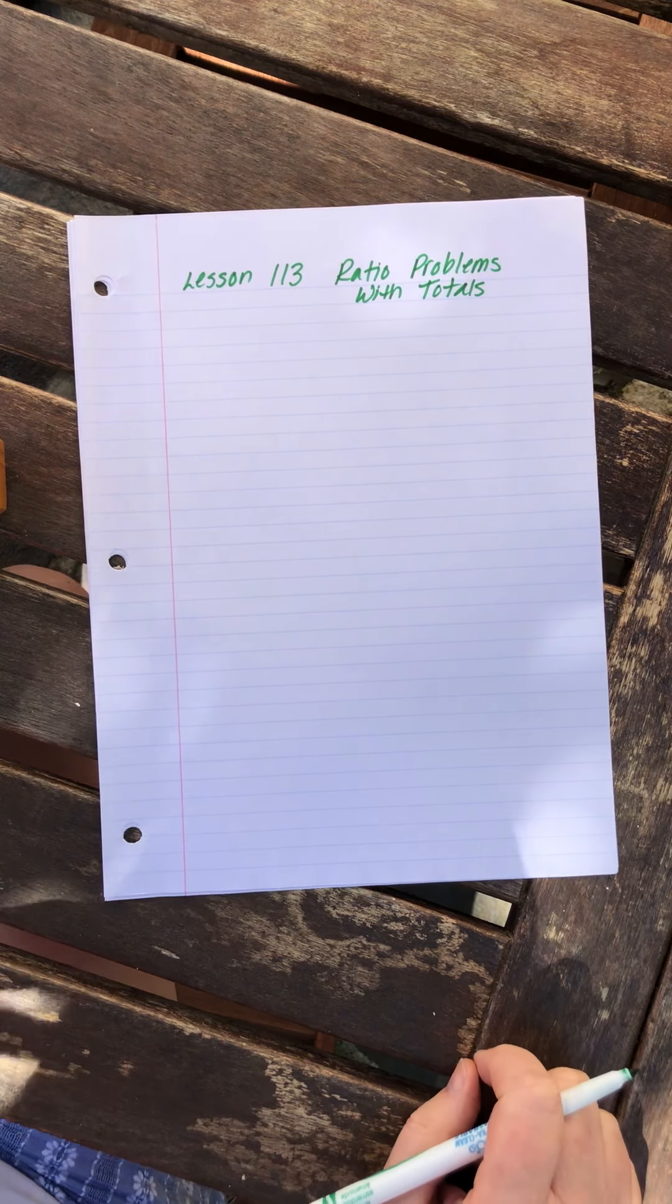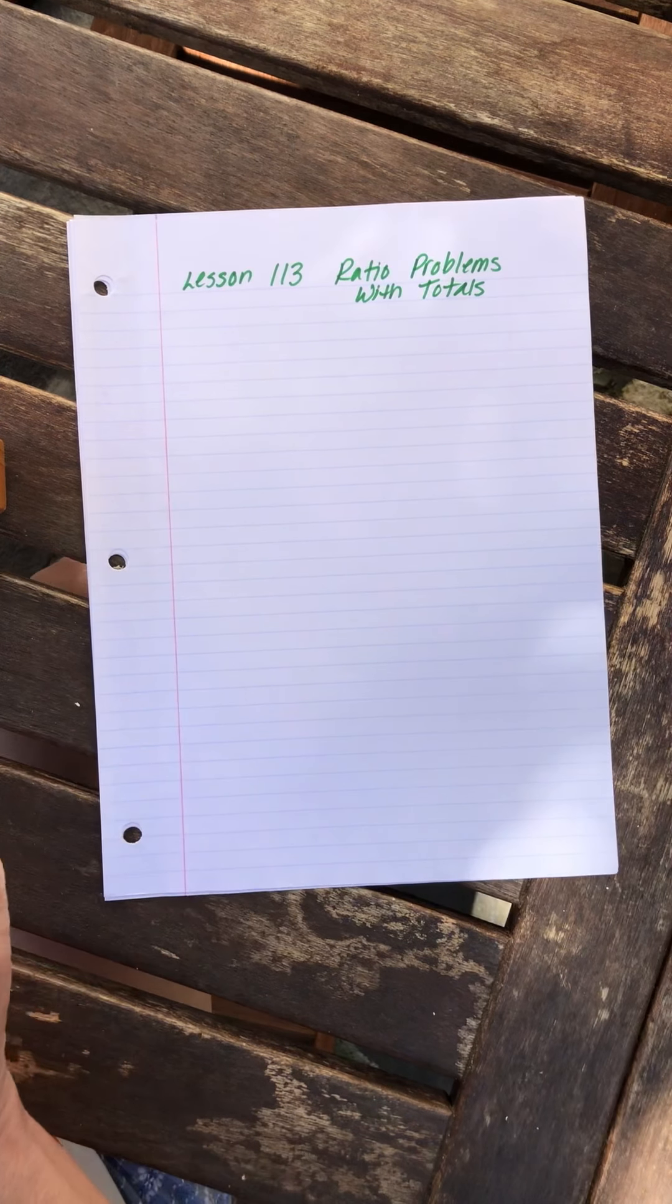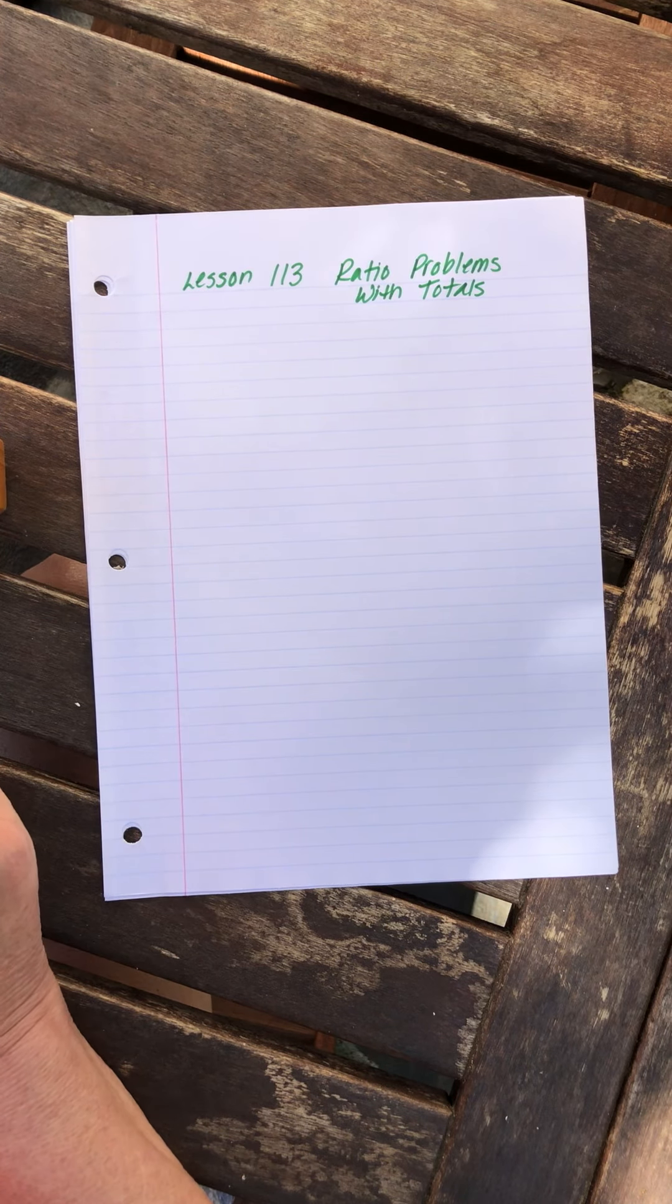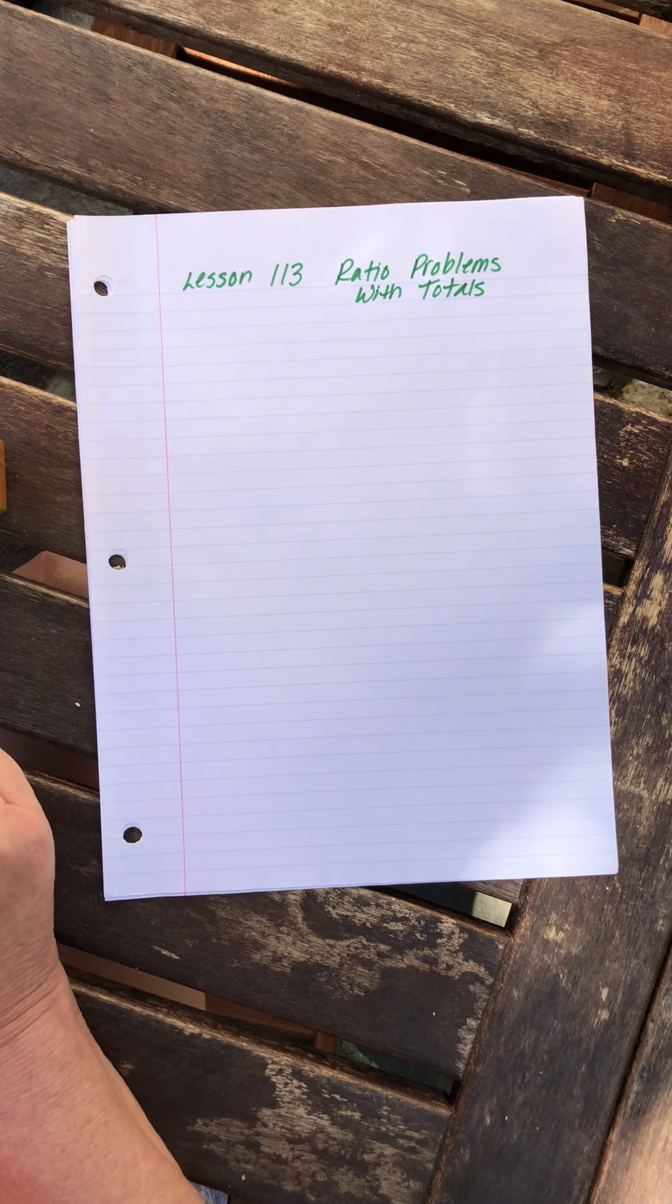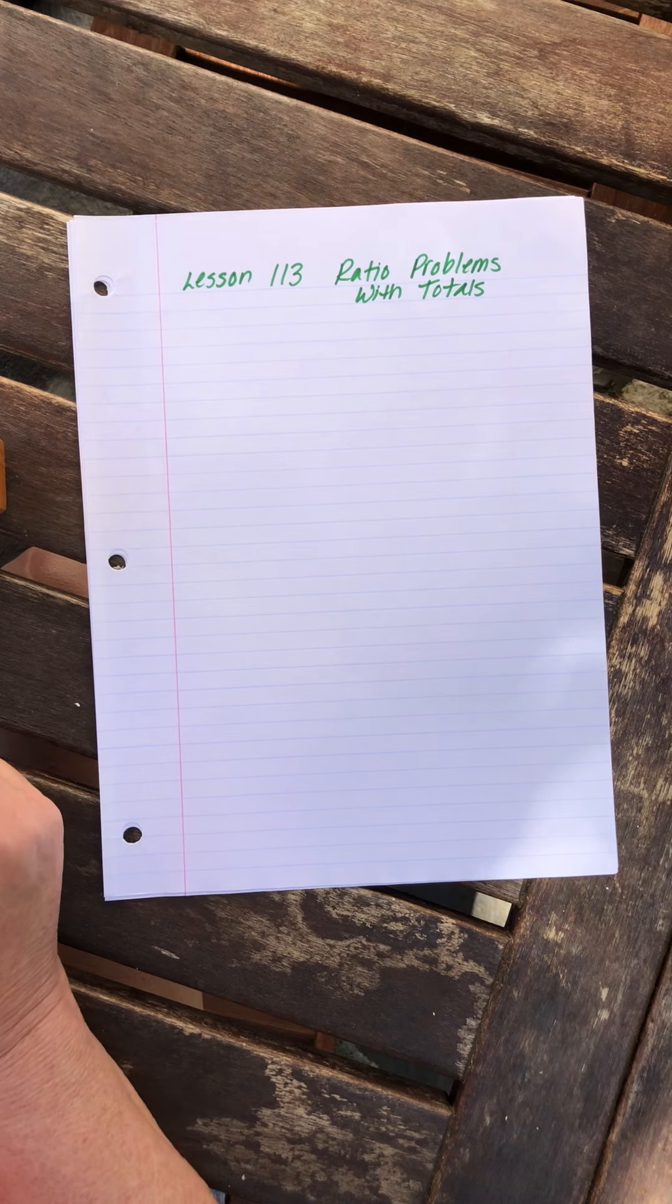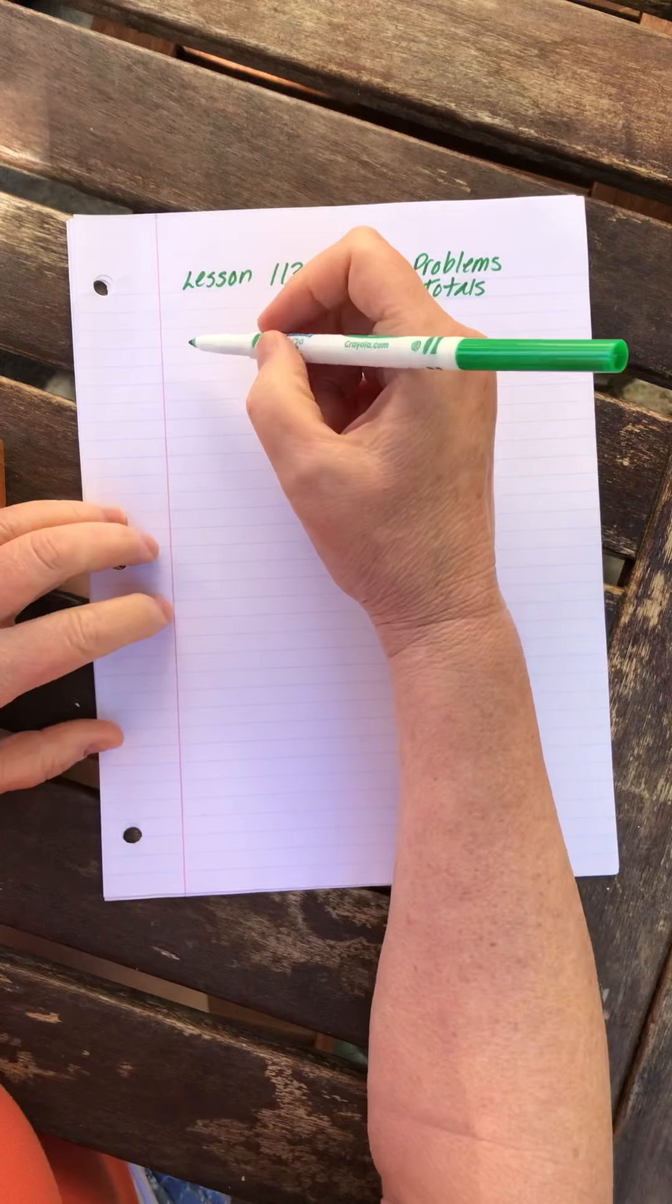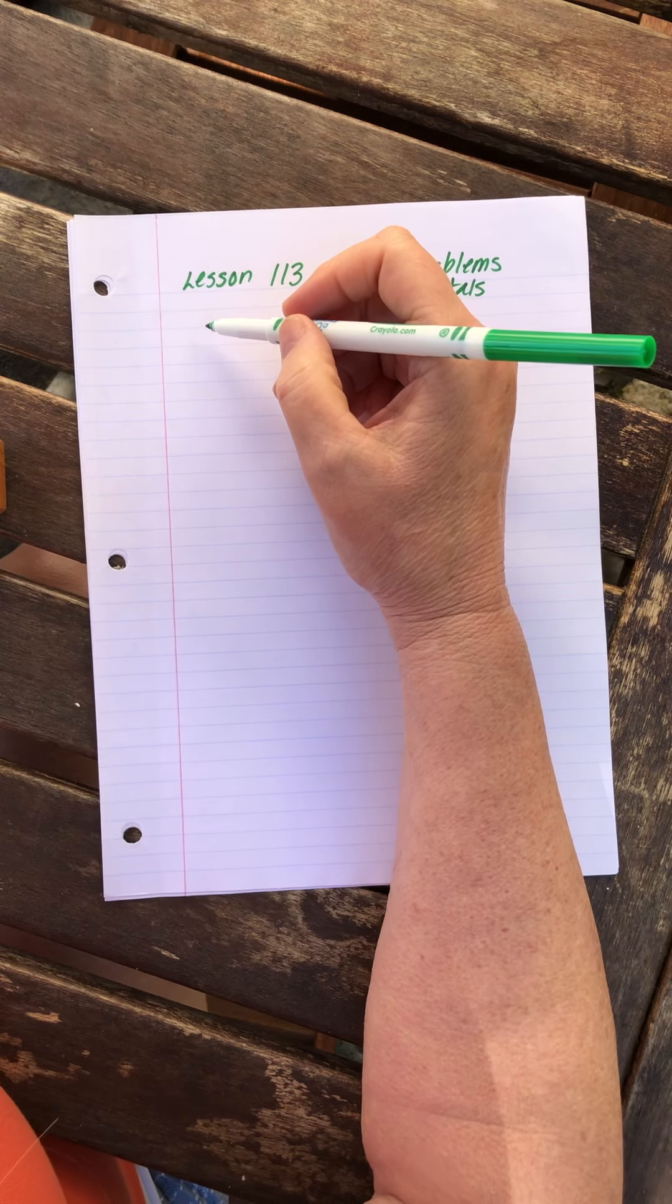Saxon Math 76, Lesson 113, ratio problems with totals. I alluded to this development when we first started doing ratio boxes with those tic-tac-toe boxes, and I told you that later we were going to add a total. Well, today that time has come.